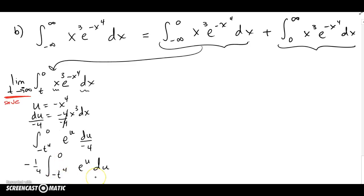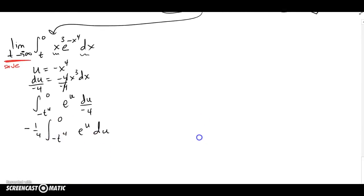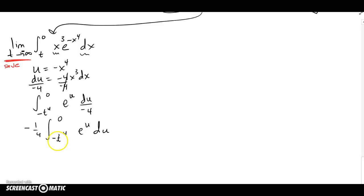So I've got -1/4, -t^4 to 0, e^u, du. I kind of don't like the -t^4 on the bottom and the 0 to the top, so I'll just switch them. Again, I don't have to, but I'll put the 0 on the bottom and the t^4 or -t^4 for my top limit. So that's just by choice.